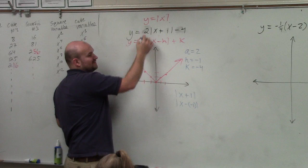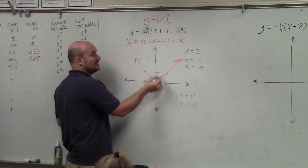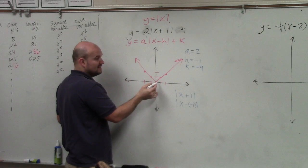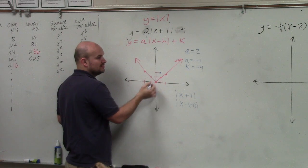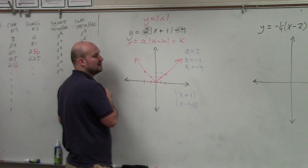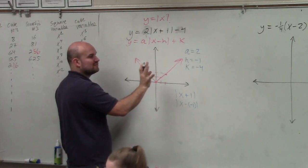So in this case, you can kind of think of this, instead of going over 1 up 1, it's now being multiplied by 2. So you can think of that as over 1 up 2. Oh, actually, I'm sorry. I'm getting way ahead of myself. First thing we should do, though, is find out where it's transforming.